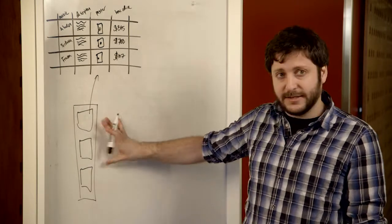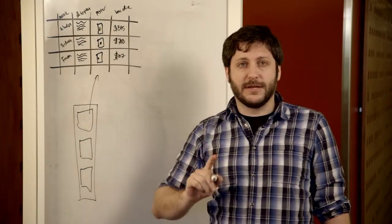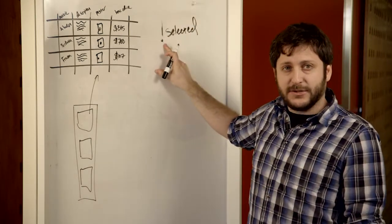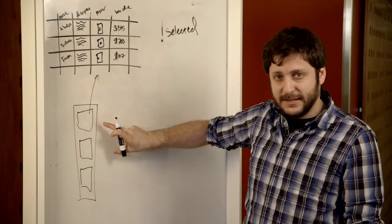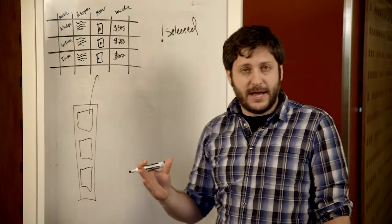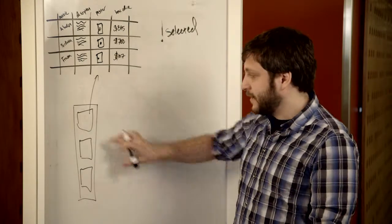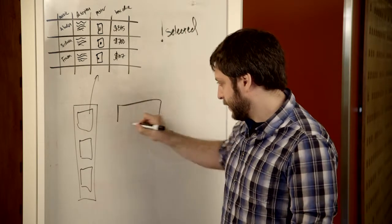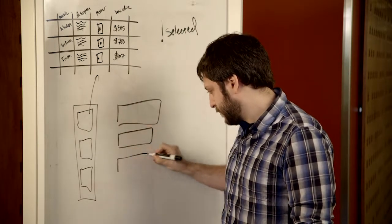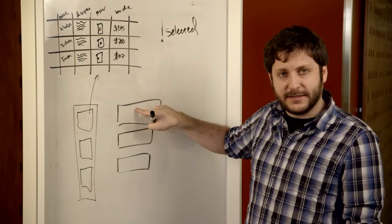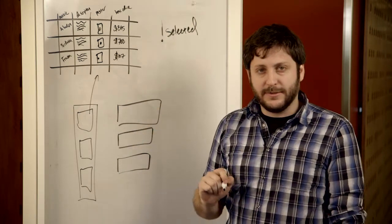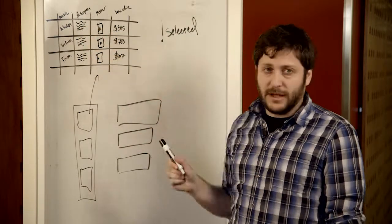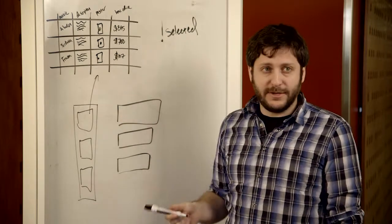In previous videos we've shown you how to do this. Now I want to introduce something called selected. Bang selected is going to give you the currently clicked selected item inside of your gallery. So what can I do with that? I click on a poster, I'm going to add a whole bunch of labels. And then in the text property for these labels, what I'm going to do is say: give me the piece of information from the column from the selected item in the gallery that I'm interested in.